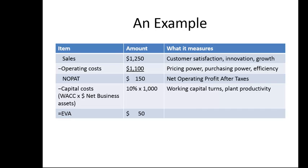So in this case the economic value added is 50. If the firm can, for example, reduce its working capital by 200, they would be able to increase their economic value added. This has become a very popular measure in the business world in terms of measuring performance and in terms of doling out bonuses — it's quite popular and gets used widely.